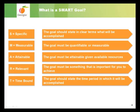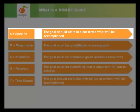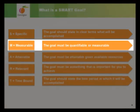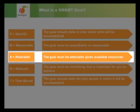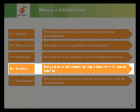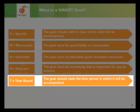So what is a SMART goal? A SMART goal is one that is Specific — the goal should state in clear terms what will be accomplished. It is Measurable — the goal must be stated in quantifiable or measurable terms. It is Attainable — the goal must be attainable given resources that are available. It is Relevant — the goal must be something important to achieve; it must matter to your department, agency, and the state. And a SMART goal is Time-bound — the goal should clearly state the time period in which it will be accomplished.